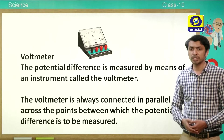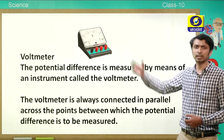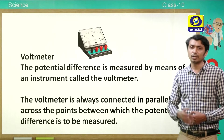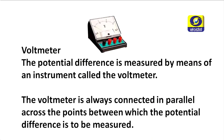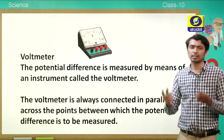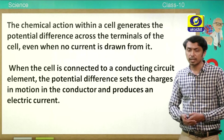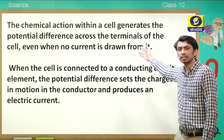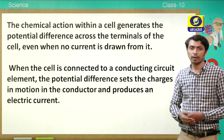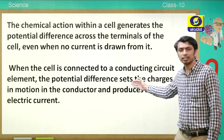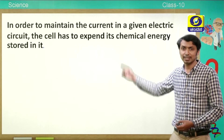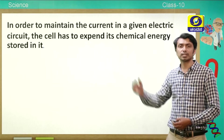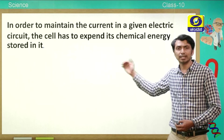Earlier we saw how to measure electric current using an ammeter. Now, how can we measure the potential difference? We use an instrument called the voltmeter, connected in parallel in the circuit, so we measure the potential difference across the two edges of a component. The potential difference is generated by the chemical action inside the cell, which sets charges in motion and produces electric current.